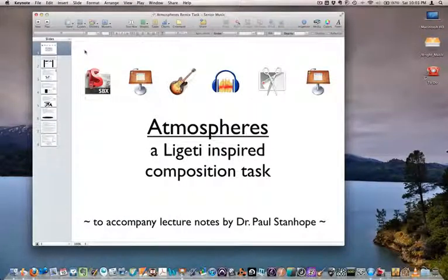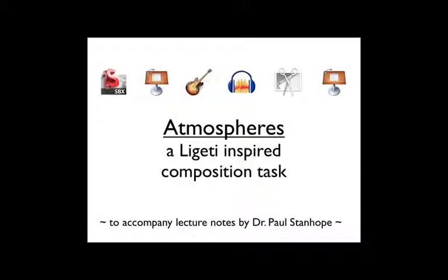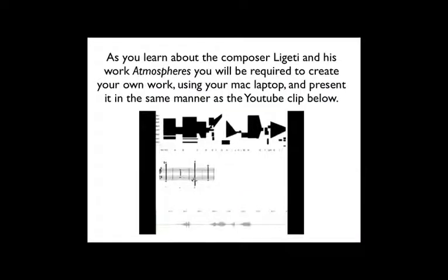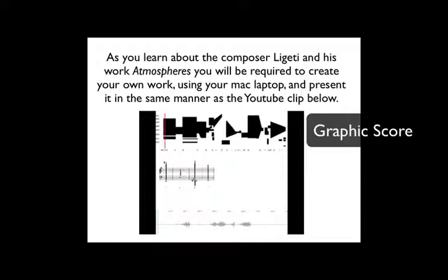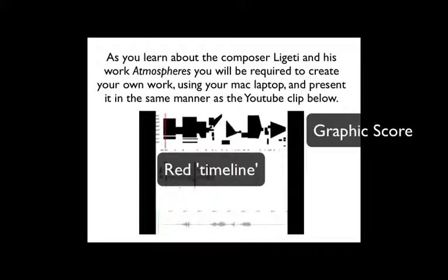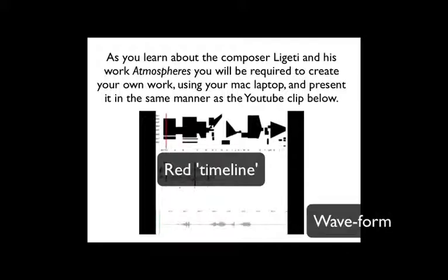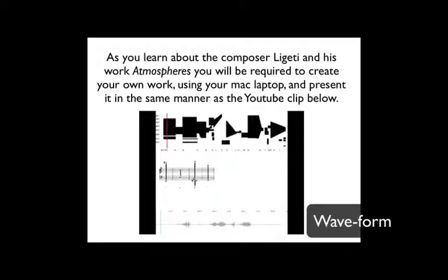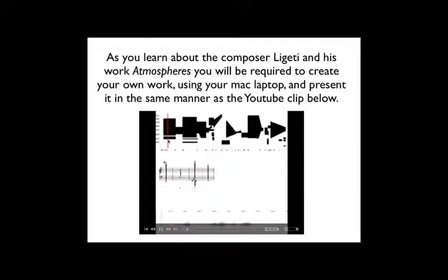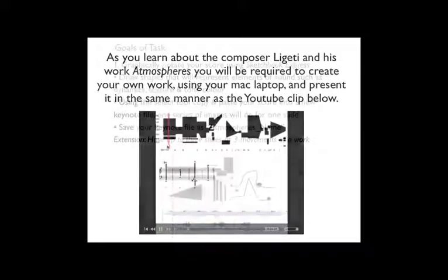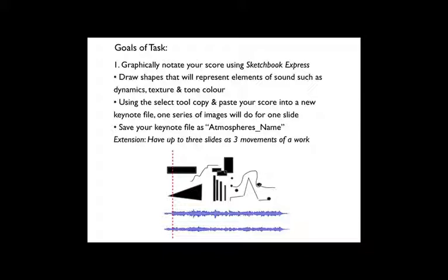Let's have a look at the task. As you learn about the composer Ligeti, you will be required to create your own work. There will be a graphic score with an animated red line showing the timeline of your composition, as well as a waveform underneath your graphic score that will show the density of your composition exported from GarageBand. Your teacher will guide you through each step of the task, and here is one I've created earlier. You can see I have a graphic score, a waveform underneath, and an animated red line showing the duration of the composition.